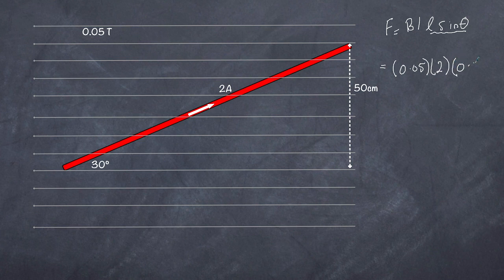But if you wanted to work out L and use the angle of 30 here, you'll notice that L will actually be equal to 1 meter. When I calculate that out, I'm going to get 0.05 newtons.